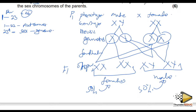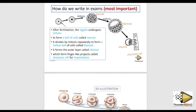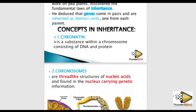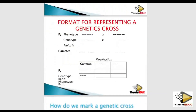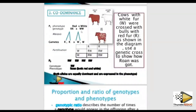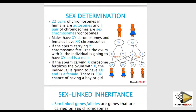The question asks to show how gender in humans is determined by the sex chromosomes of the parents. If they say 'describe' how sex is determined, you talk about autosomes and sex chromosomes. But if they say 'using a genetic cross,' then you must perform the full cross as shown. They want the cross, not just a written description.